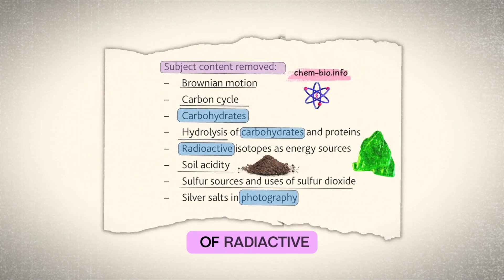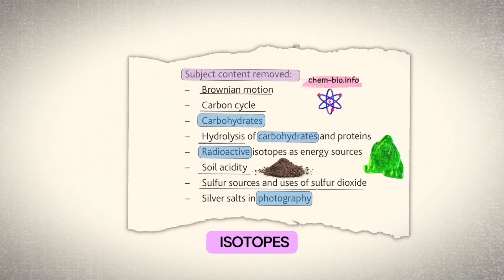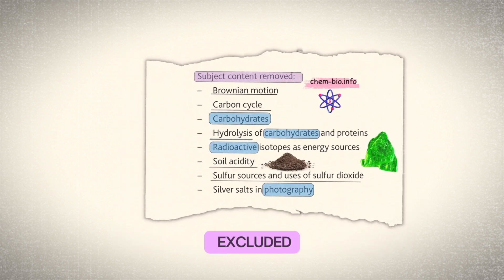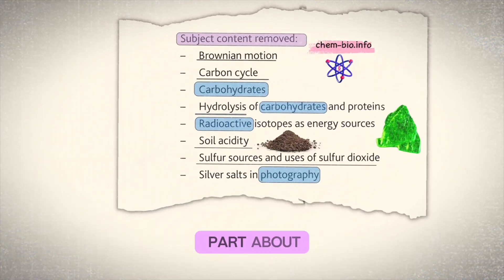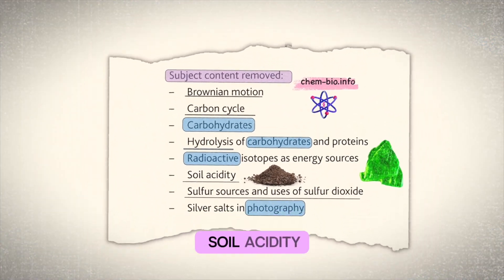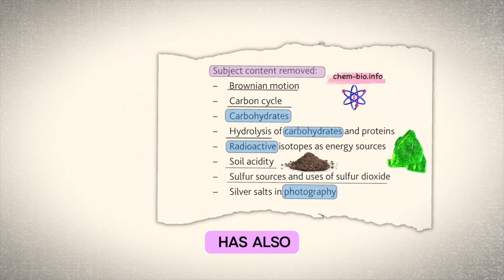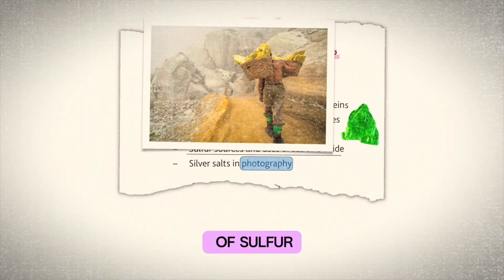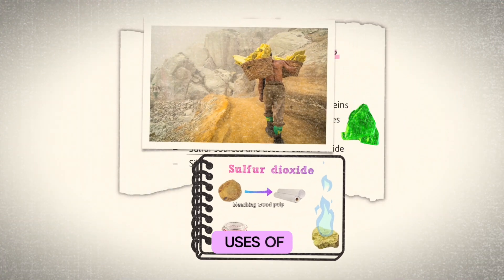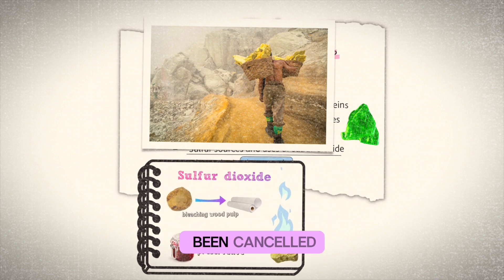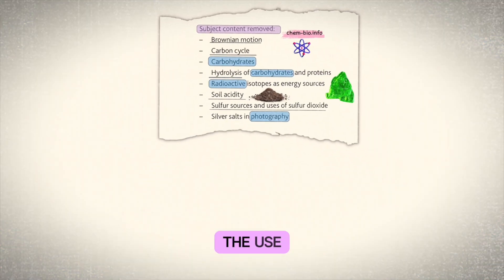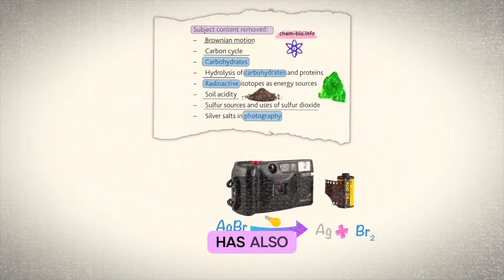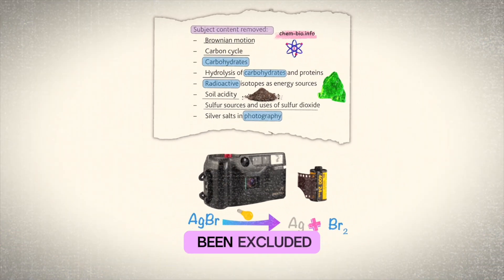The use of radioactive isotopes such as uranium is another part that's been excluded. The part about neutralization of soil acidity has also been eliminated. The topic of sulfur and the uses of sulfur dioxide has also been cancelled. The use of silver salts in photography has also been excluded.